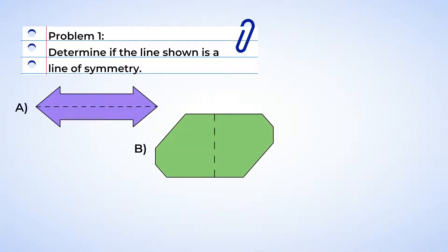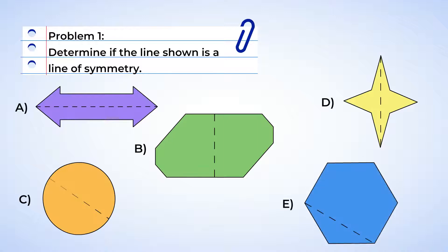Determine if the line shown is a line of symmetry. Alright, we can do this. Let's imagine folding each shape along the dotted line. If the two parts line up exactly, then the line shown is a line of symmetry. Let's get started.